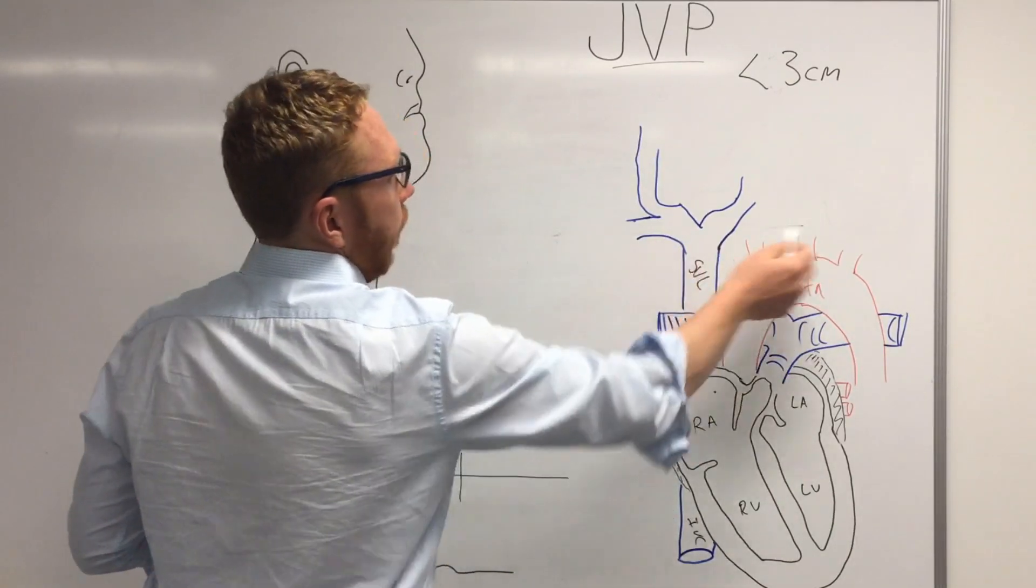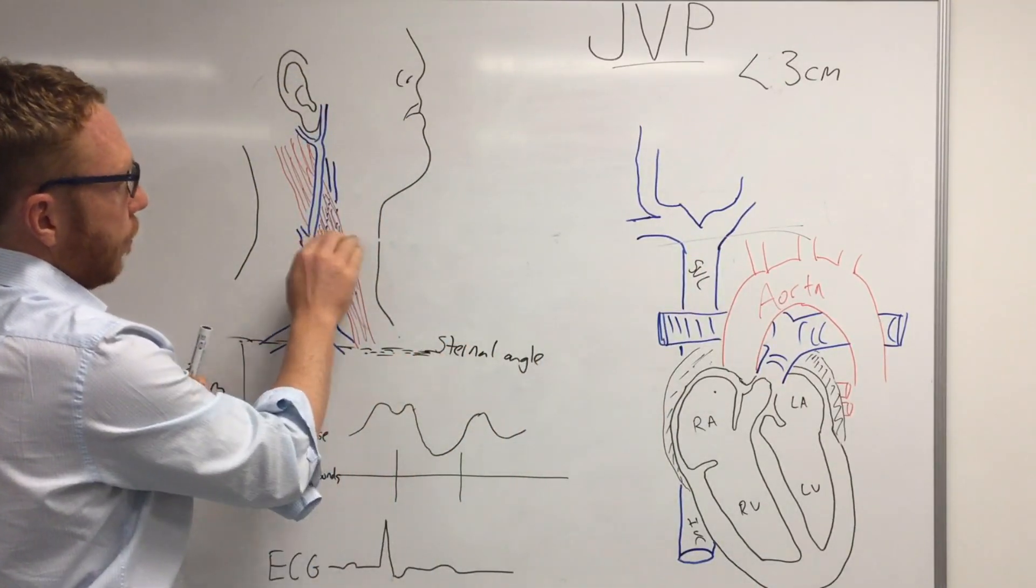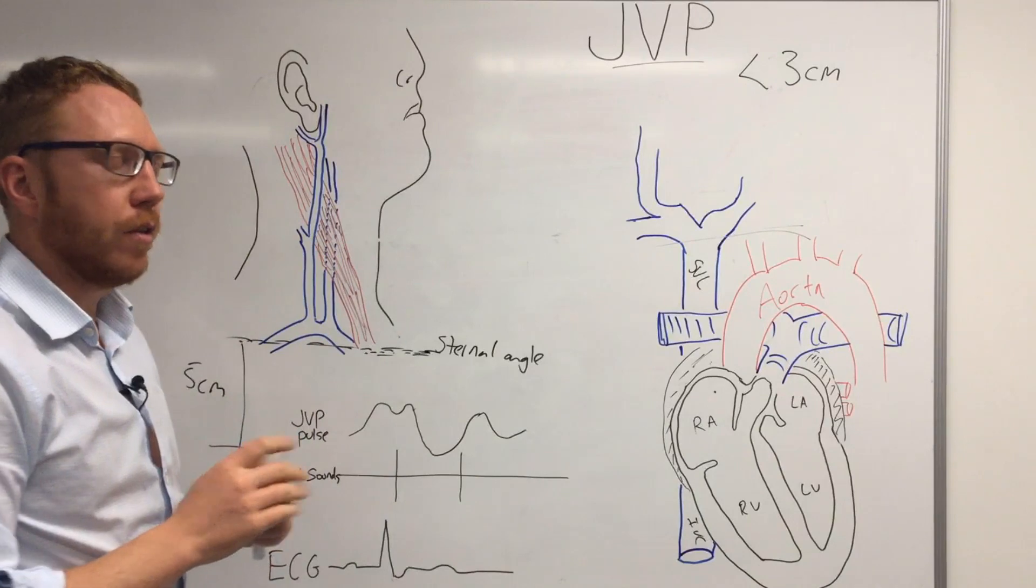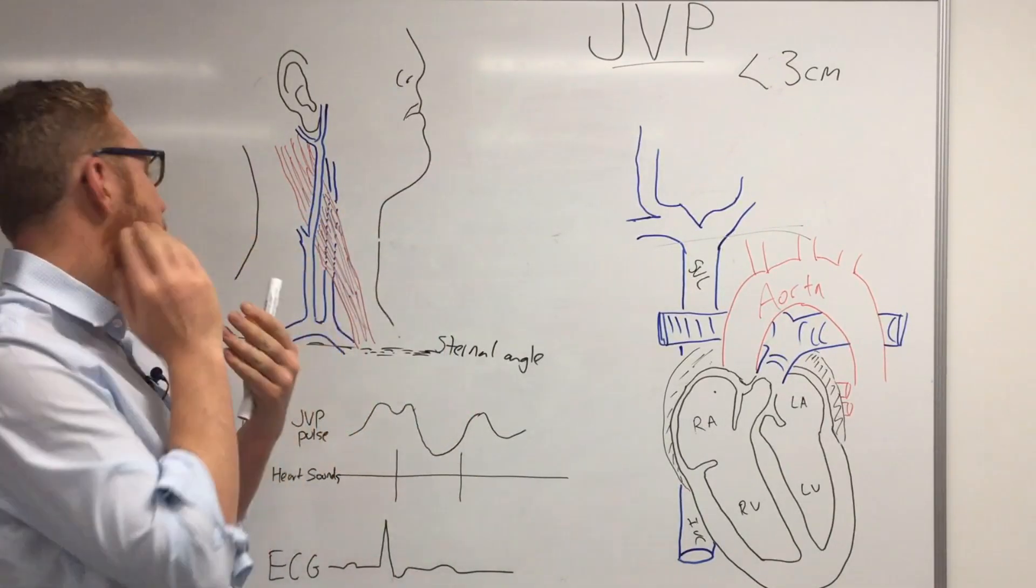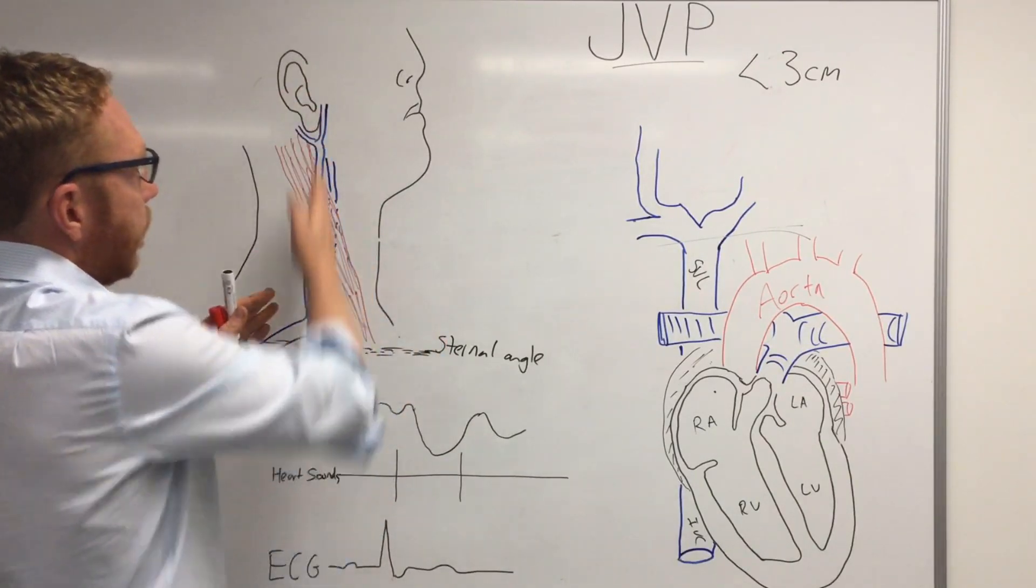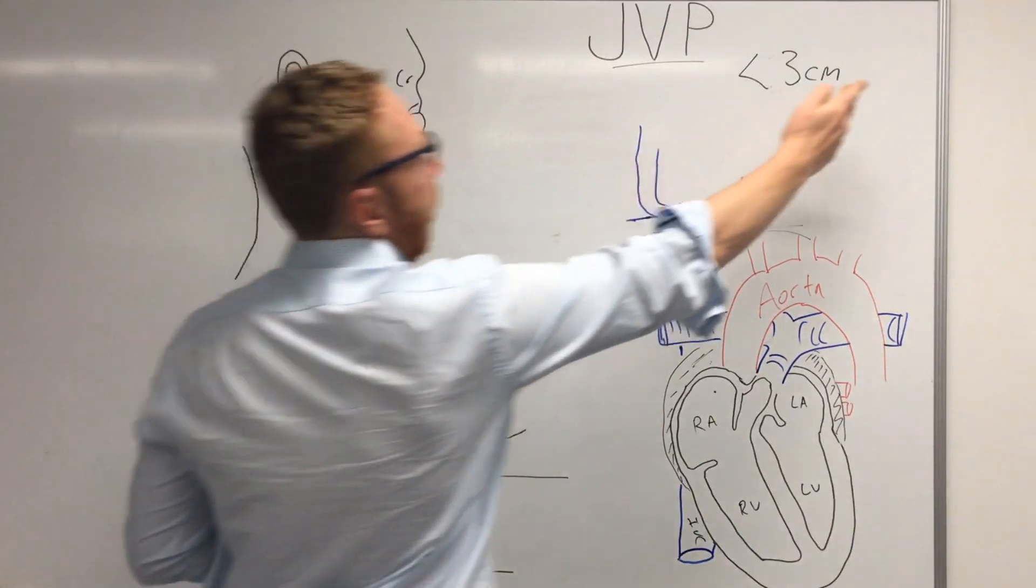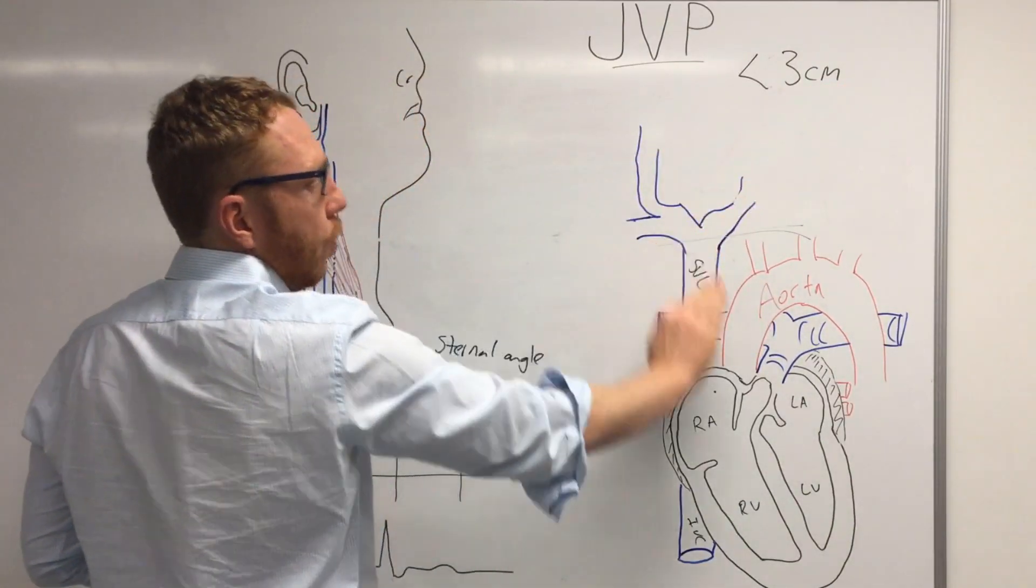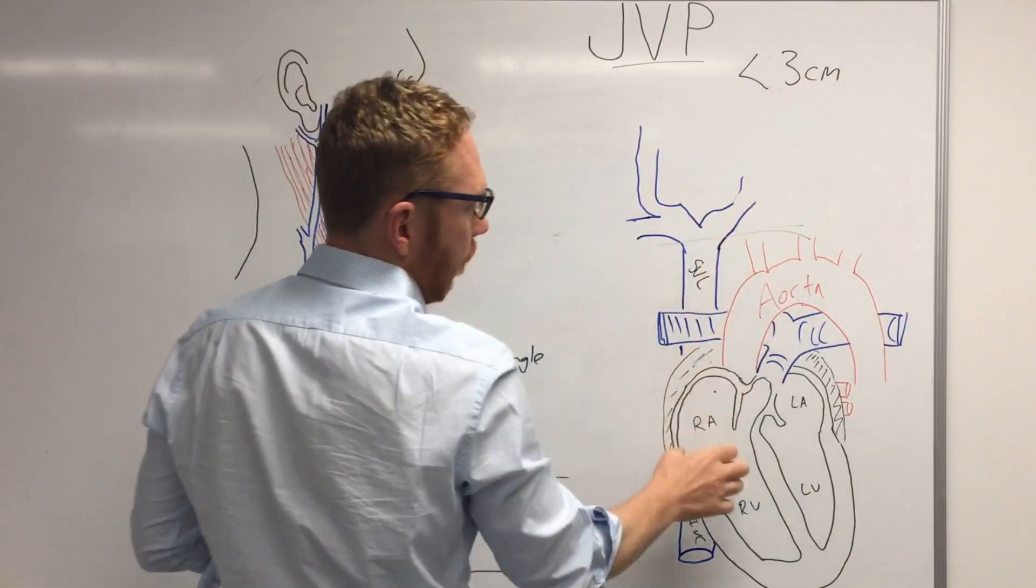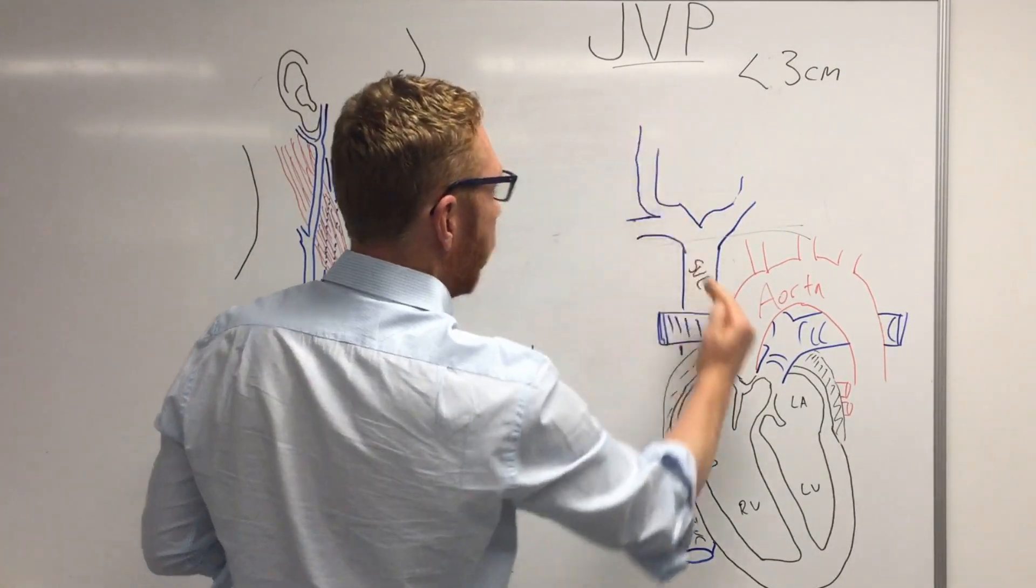So the sternal angle is going to be kind of up here. Now if you can see where the pulsations are in your patients, so again you've got them on an angle, you've got their head tilted away. Now the reason why we use the right internal jugular vein and not the left is because the left comes from the other side and it's not a good representation of this column of blood. It's better to go up with the right side.